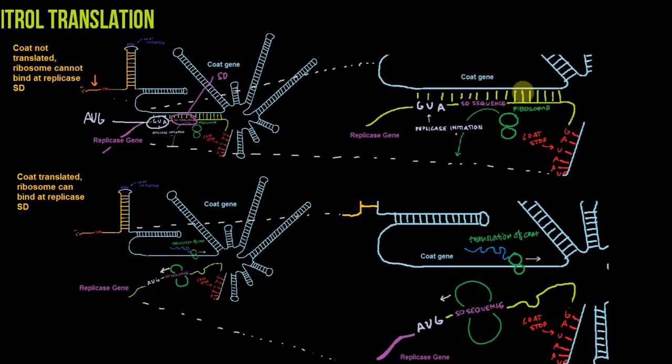So if the coat gene is not being translated, if this base pairing is occurring, then the ribosome cannot bind at the replicase Shine-Dalgarno. However,